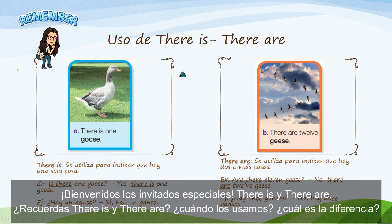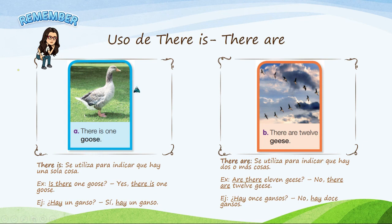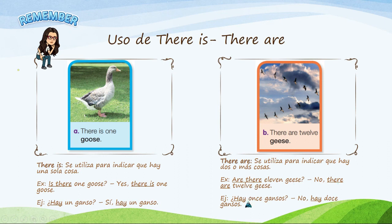Welcome, special guests — there is and there are. Do you remember there is and there are? When do we use them? There is is used to indicate that there is one single thing. For example: is there one goose? Yes, there is one goose. To turn there is or there are into a question, invert the order — place the verb to be at the beginning. There are is used to indicate two or more things. For example: are there eleven geese? No, there are twelve geese.